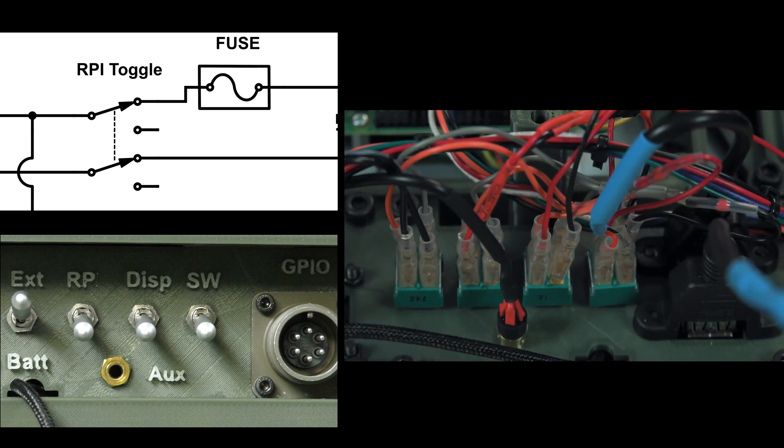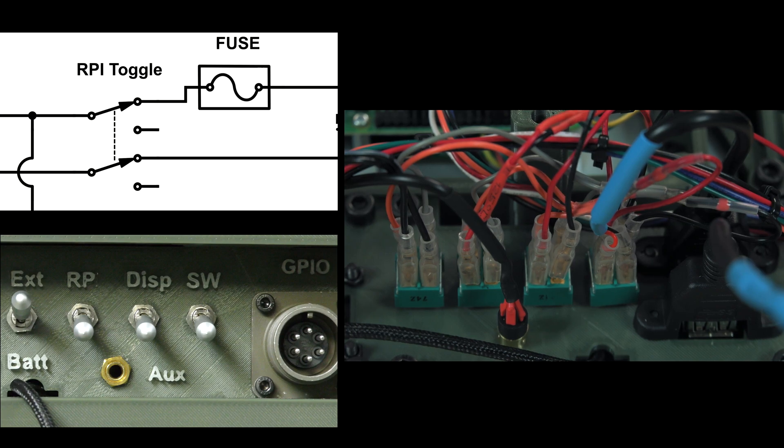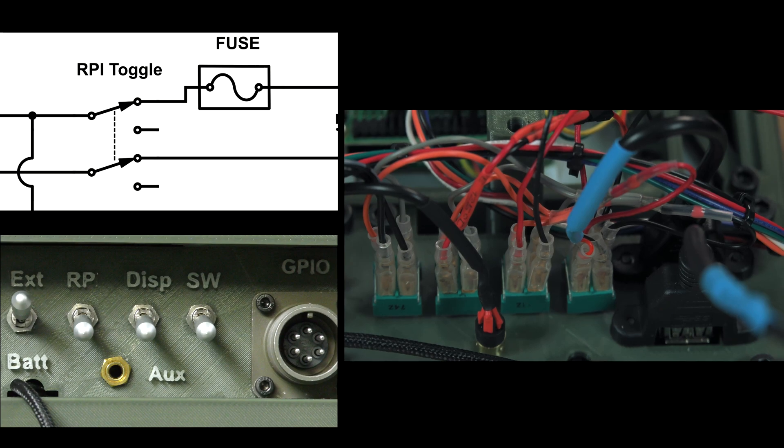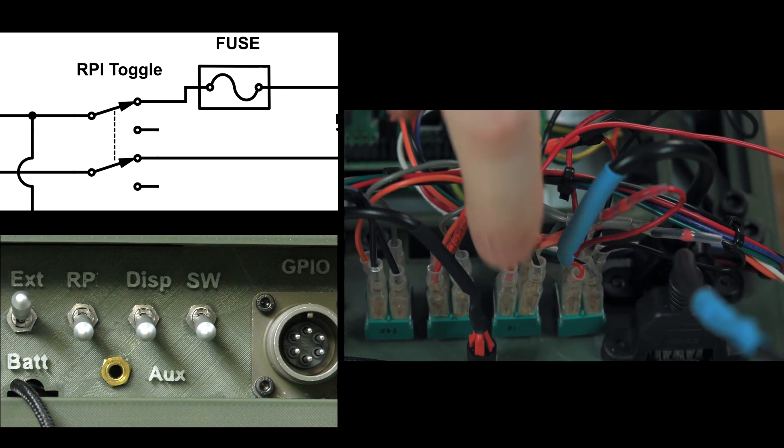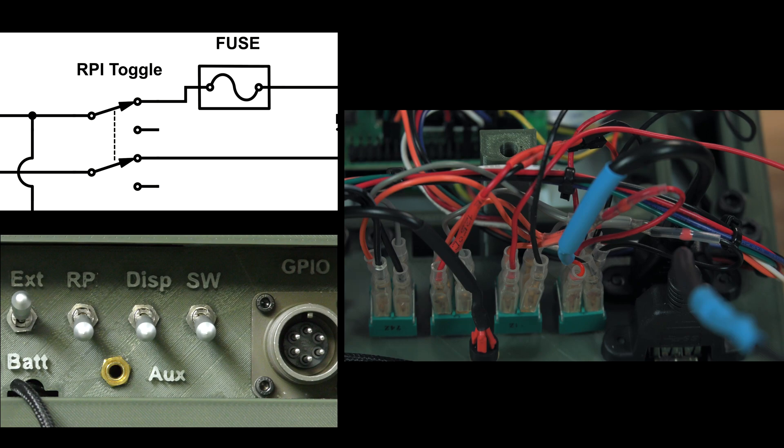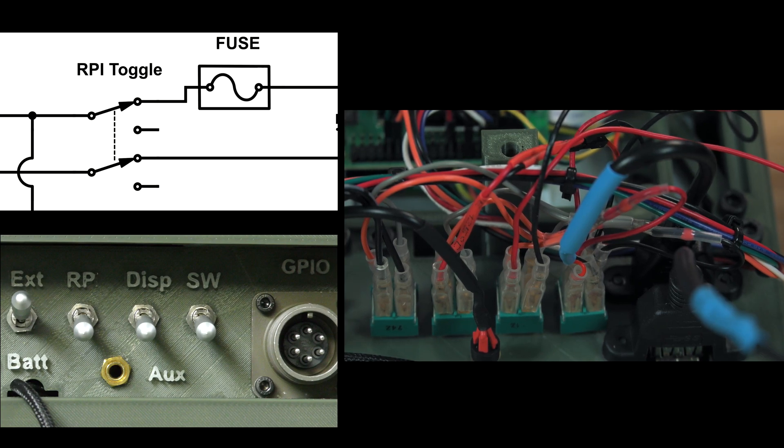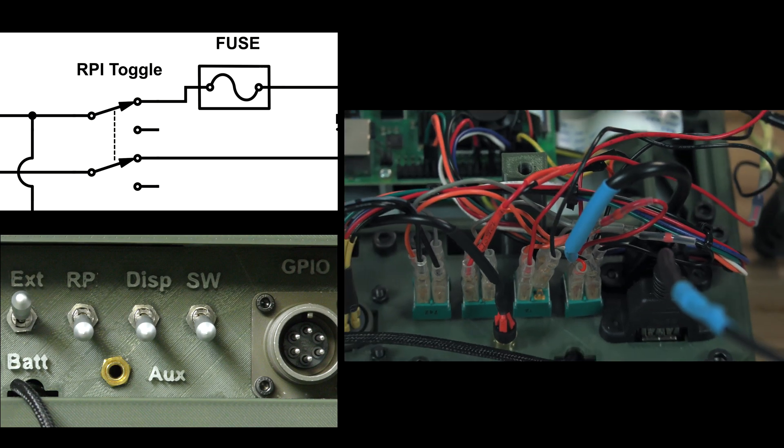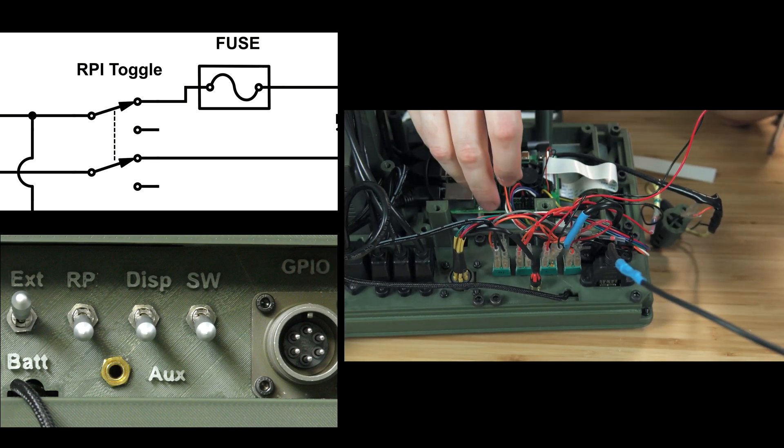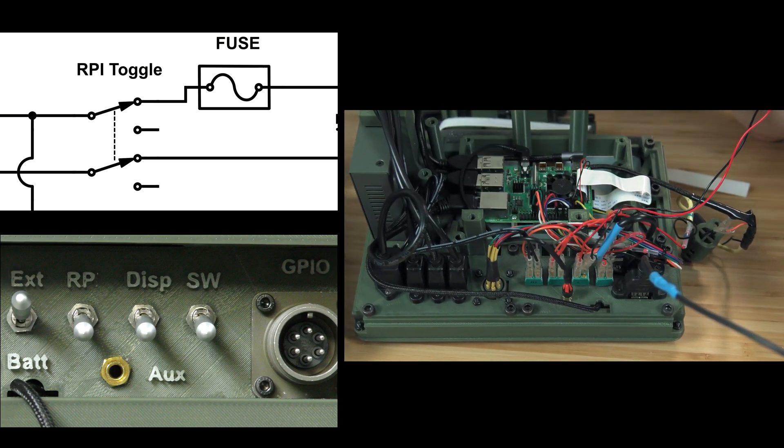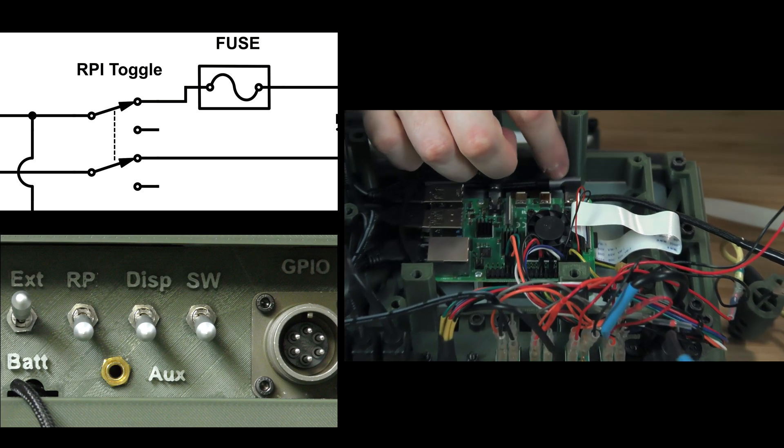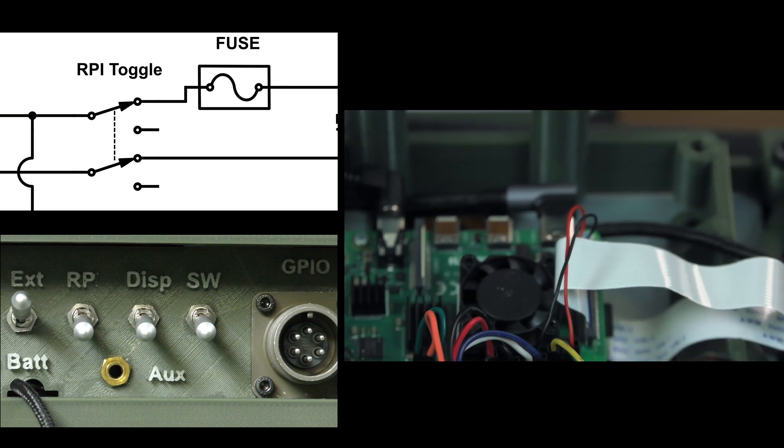Now I will note that there are some aspects to this first switch that we need to cover that I'm going to actually change in the future. The first is that the power doesn't come out from this Raspberry Pi switch directly to the Raspberry Pi itself. If you actually look, I'll point out the Raspberry Pi's power source here. That is right here.